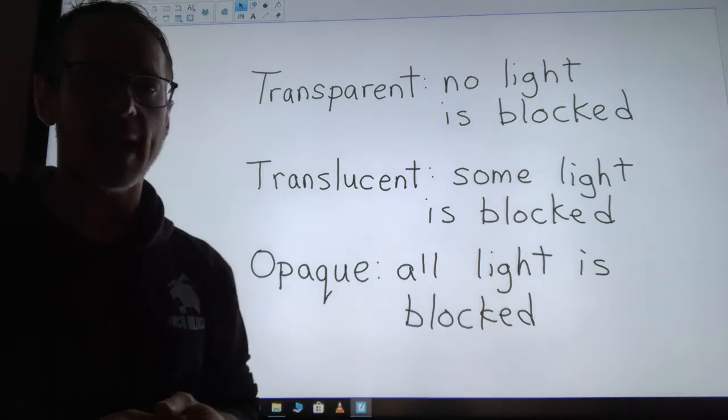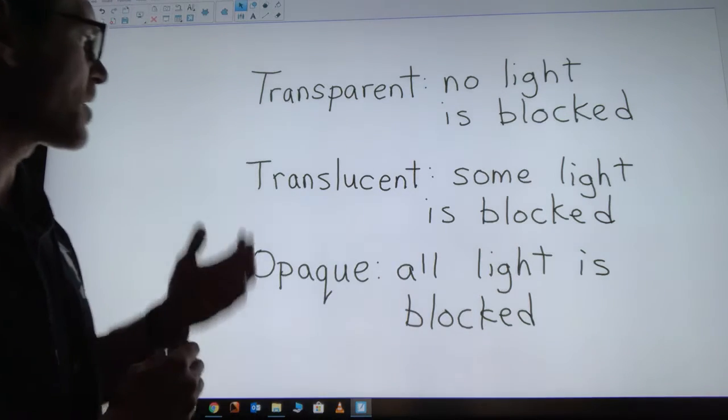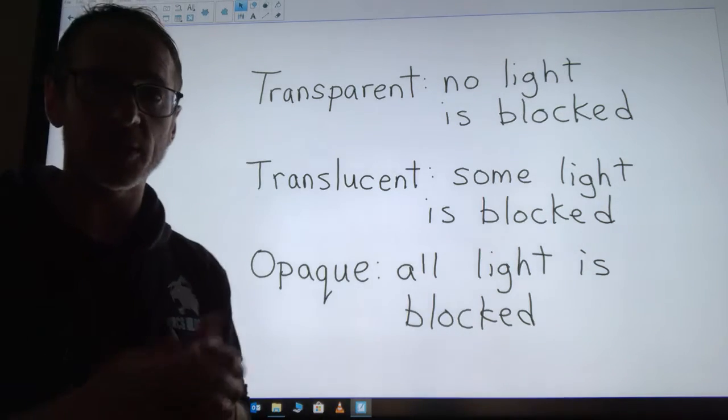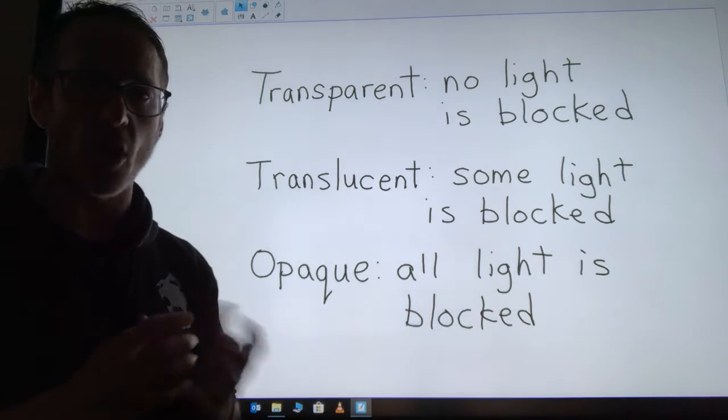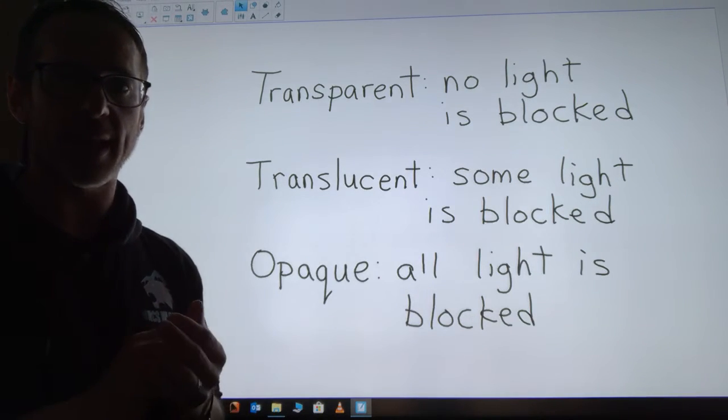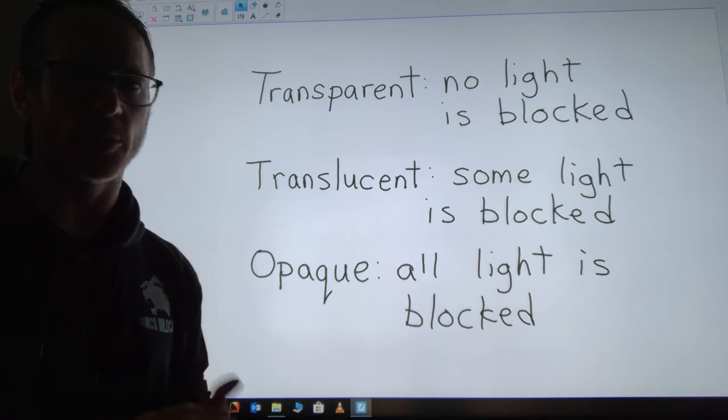Translucent means that it blocks some of the light but allows some light to get through too, so something like Kleenex. Something that's opaque blocks all the light. So when the light comes to that material it is completely blocked and no light will come through, like a rock.